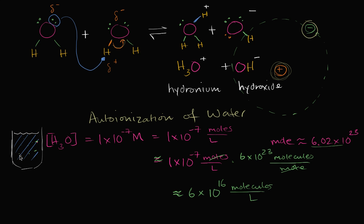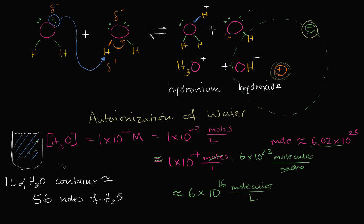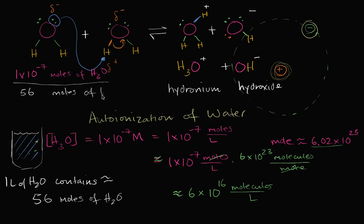But we have to remind ourselves there are just a lot of molecules of water in there as well. In fact, a liter of H2O contains approximately 56 moles of H2O. So one way to think about it is: in a liter of water I have 1×10⁻⁷ moles of H3O for every 56 moles of H2O.